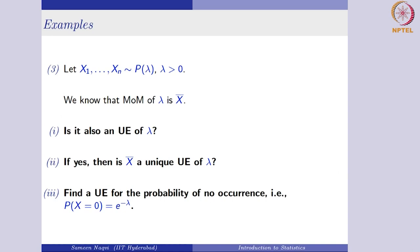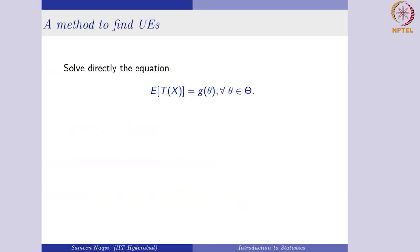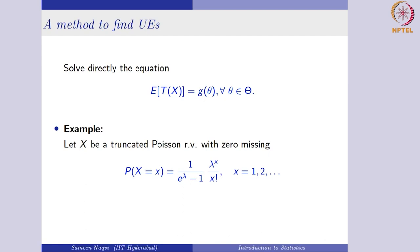So far, we have been taking estimators from the previous lecture and checking whether they were unbiased. Now the question is: if you have to find an unbiased estimator from scratch — without knowing beforehand what the estimator should be — what do you do? In that case, we directly solve the equation E(T(x)) = g(θ) for every θ in the parameter space. To understand this, let us consider an example of a truncated Poisson random variable.